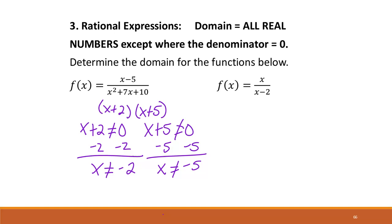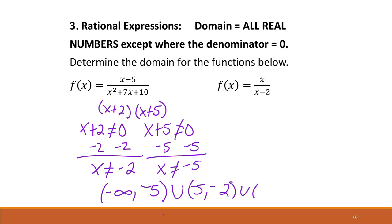Because these values are non-inclusive, we have to think about all points other than negative 2 and negative 5. We start at negative infinity and go to negative 5 — using a parenthesis since it's not included — then union, picking back up just past negative 5 and going to negative 2, then union negative 2 to positive infinity. This covers every value other than negative 2 and negative 5.